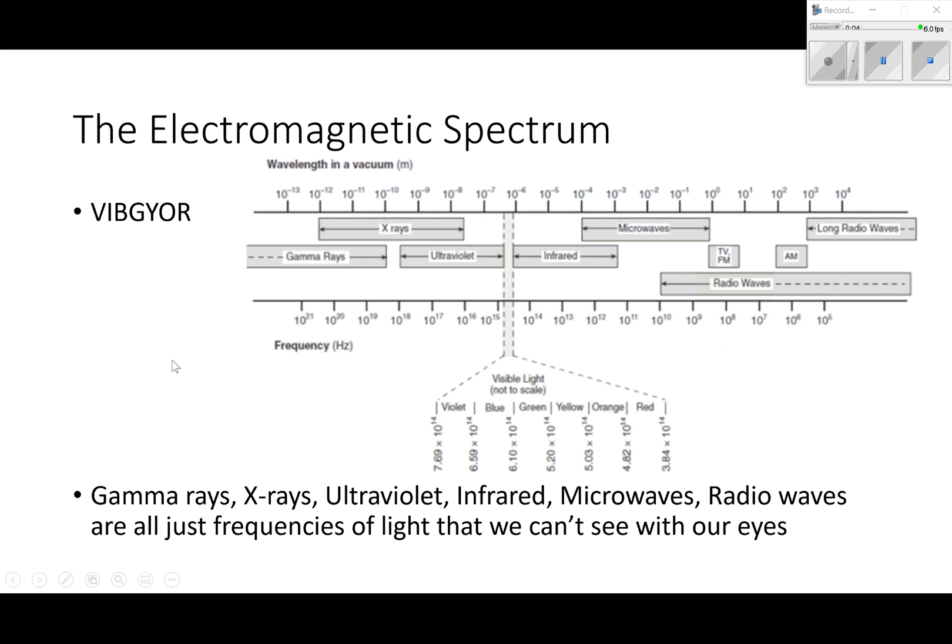And then after red we go to infrared, microwave, radio waves. We have TV, FM, AM, and long radio waves. So just this tiny fraction is all that we see with our eyes. There's all the rest of this that we can't see that's just out there, that maybe if we had different eyes we'd be able to see all this stuff.